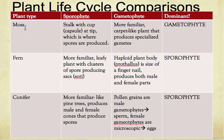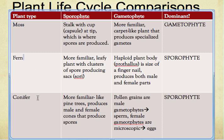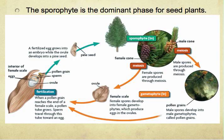We talked about moss, we talked about fern, and now we will talk about the conifer life cycle. The conifer life cycle is the easiest section. Sporophyte is the dominant phase for seed plants. This picture shows the whole process of fertilization in the male cone and the female cone. Both cones are still haploid, but when the process of fertilization takes place, it becomes a diploid cell.